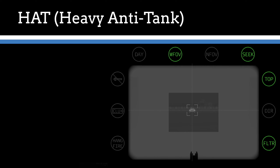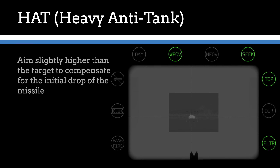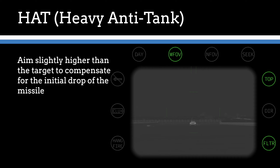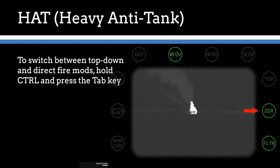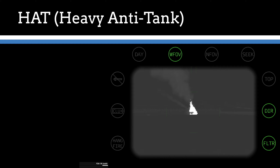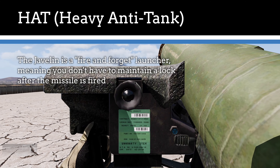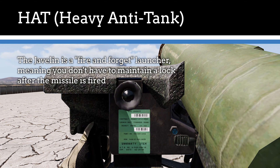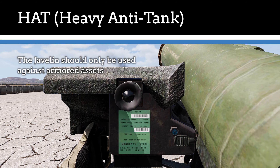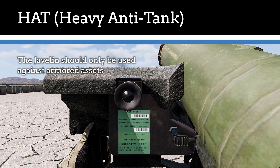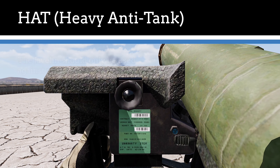Once locking is complete, a tone will sound and you can fire the missile. Once the missile has been fired, it will drop slightly upon exiting the tube, so be sure to aim a little bit above the target to make sure the missile does not strike the ground. The Javelin can be fired in a top-down mode, which is default, and a direct fire mode. To switch modes, simply press Control plus Tab and verify that the corresponding indicator is lit. It is also a fire-and-forget launcher, meaning that once the missile is away, the lock does not need to be maintained. Note that while the Javelin can lock on to targets other than just armor, using it against anything else is generally discouraged due to the logistical problems that it can create.